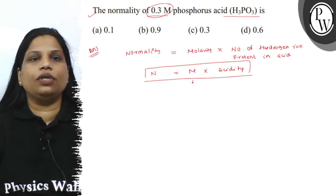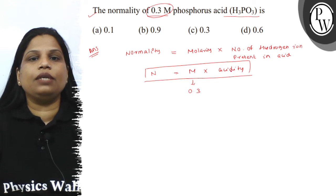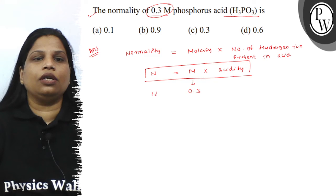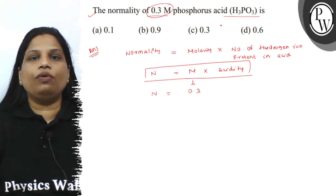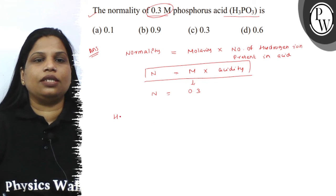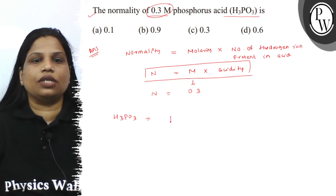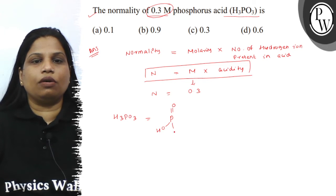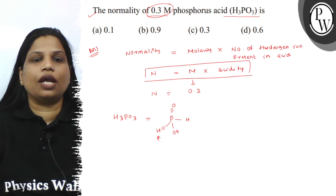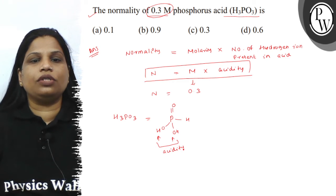The molarity value is given as 0.3, and if we know the acidity, then we can calculate the normality. Now, phosphorous acid is H₃PO₃. If you see the structure of phosphorous acid, it has P double bond O, with 2H and one H.